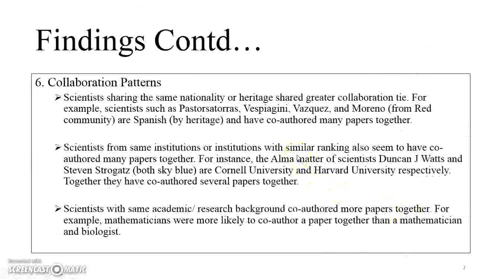This research paper concludes by identifying collaboration patterns observed in the network, which is the most interesting section. One pattern is that scientists sharing the same nationality or heritage have a greater collaboration tie — for example, scientists R. Pastor-Torres, Vespignani, Vasquez, and Moreno from the red community are Spanish by heritage and have co-authored many papers together. Likewise, scientists Barthelemy and Barrat are French and share a strong collaboration tie. Another pattern is that scientists from the same institutions or institutions of similar ranking are also likely to co-author papers together.